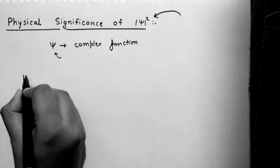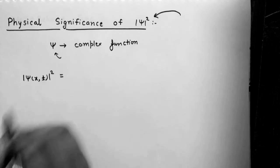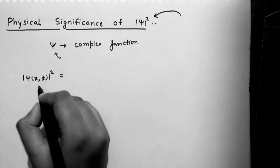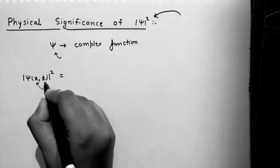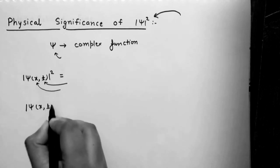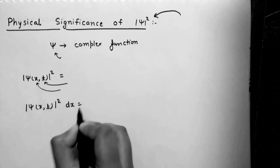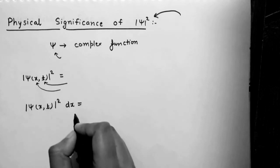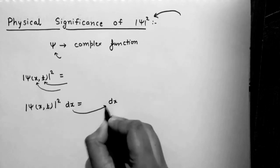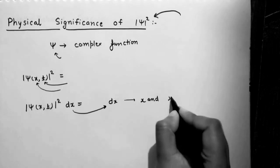So if I represent a function as |ψ(x,t)|², what does it represent? It represents the probability to find the particle at a particular position x and a particular time t. And if I multiply it by dx, it represents the probability to find the particle in a small interval dx which lies between x and x plus dx.